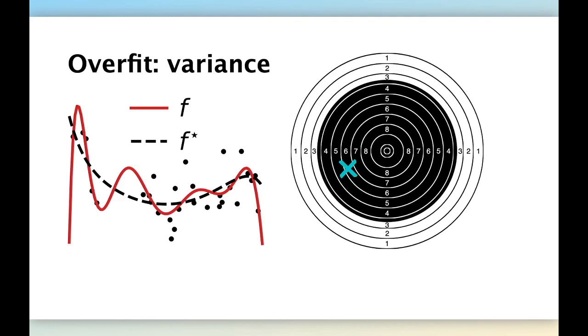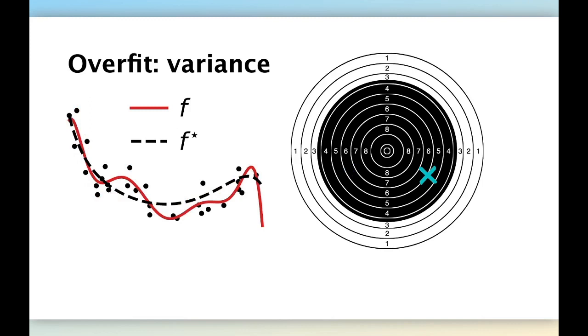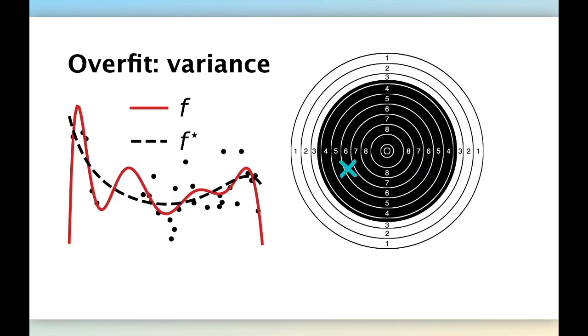We can represent this model as blue arrow on a target. Ideally, the best model would be in the center. So the f star model here would be in the center and have zero prediction error. And this model is making some prediction error on the edges in different manner left and right. And if we have access to a different training set for the same problem, we would get a different model, like making very different predictions here on the edges, and so a very different location on the target. But the error to the center, the distance to the center, or the prediction error, would be approximately the same as the previous one.